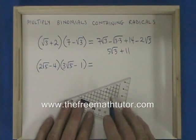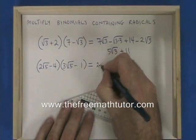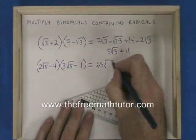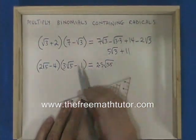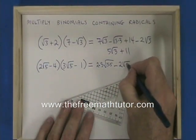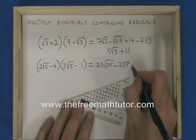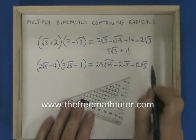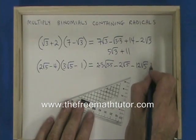In the second example, I have 2 times 3. Root 5 times root 5 gives me root of 5 times 5. I have minus 1 times 2 root 5, which is minus 2 root 5. I have minus 4 times 3 root 5, which is minus 12 root 5. And I have minus 4 times minus 1, which is plus 4.